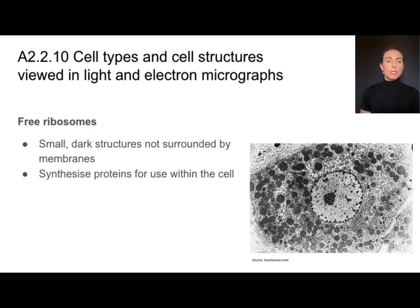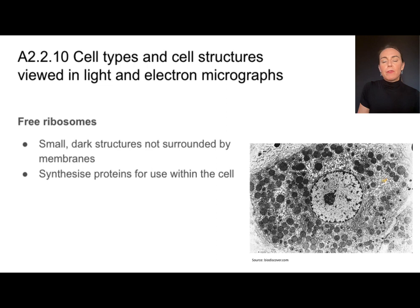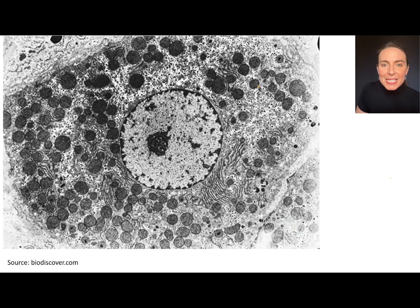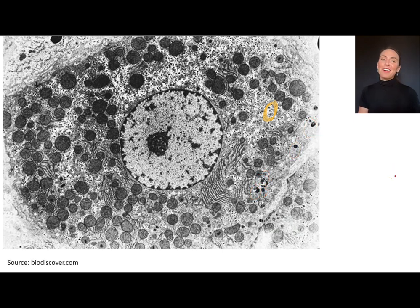Ribosomes are the site of protein synthesis. I'm going to find them in two places: attached to the rough ER and floating around freely in the cytoplasm as free ribosomes. When looking in a micrograph, I want to find these small, small dot-like structures. If I blow this up, I can see some very small dots — those are the ribosomes. You'll also notice some larger dot-like structures, which are actually glycogen granules. So look for small dots, found in the cytoplasm and attached to the rough ER.